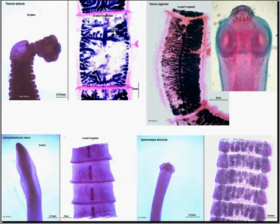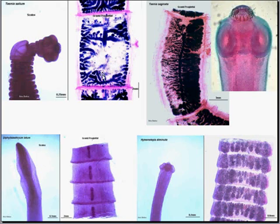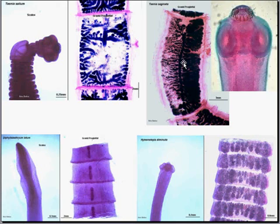Here is a proglottid. It's gravid, which means it's pregnant, which means it's making eggs. If you consider the fact that there might be hundreds or thousands of these proglottids, you can understand how hundreds of thousands of eggs, which could be picked up and eaten by pigs, can happen every day. The proglottid of the beef tapeworm is a little bit longer and bigger, but otherwise has the same general function and appearance.